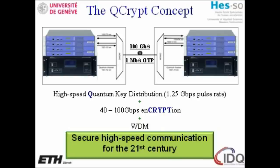The idea of this QCrypt project is to do all that much better and in particular much faster. For instance, today's systems run at 5 megabits per second, and we want to go to 1.25 gigabits per second. Also, the encryptors run today between 2 and 10 gigabits, and by the end of this project they should run between 40 and 100 gigabits per second. Moreover, we want to have only one fiber connecting both sides. The vision of the QCrypt project is secure high-speed communication for the 21st century.